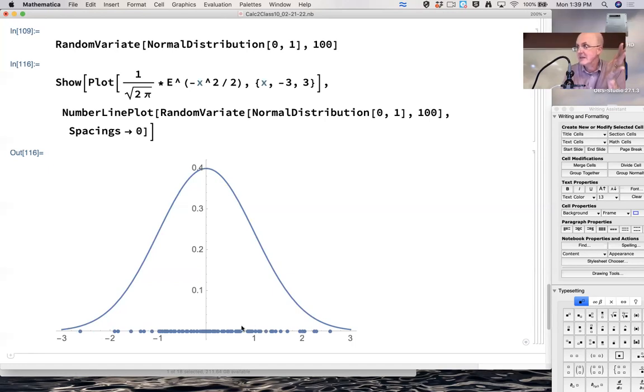95% is between negative two and two, meaning 5% is less than negative two or bigger than positive two. Areas under the curve give you those percentages. Areas. Integrals.